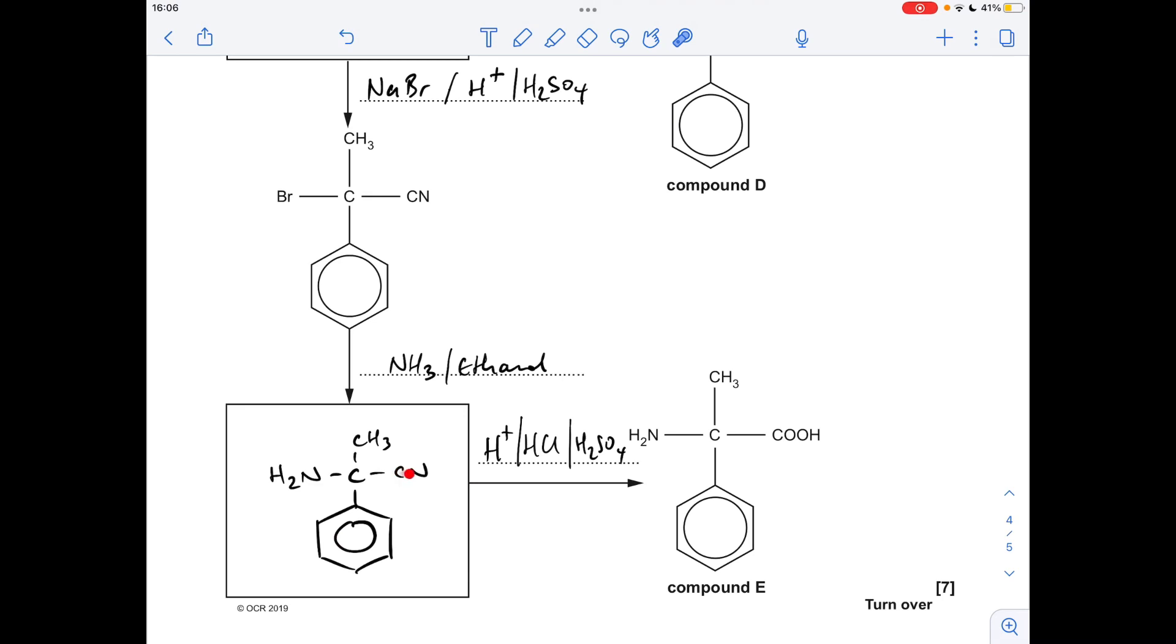And then I need to hydrolyze the nitrile group to the carboxylic acid group, so I can react it with a source of acid effectively. So H plus ions, HCl, H2SO4. And if you've done it the other way around, obviously that's the intermediate there.